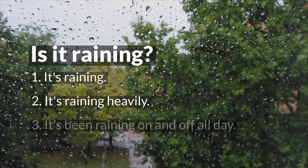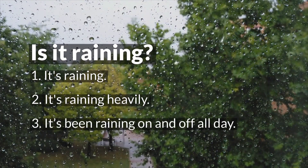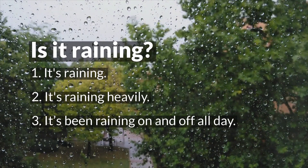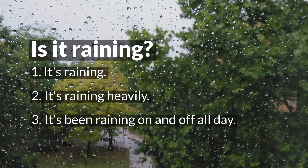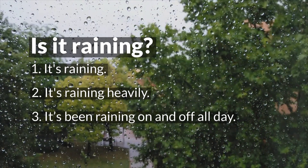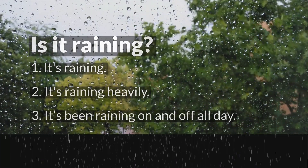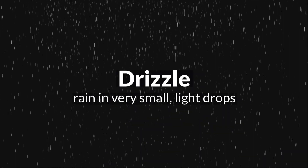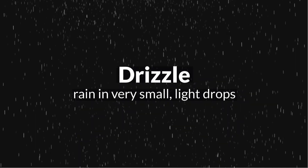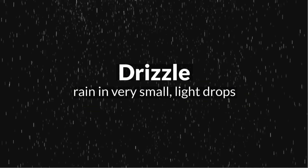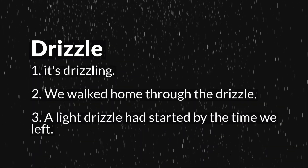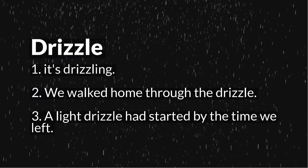The next expression: 'Is it raining?' — that's how you ask. If it is raining, you say 'Yes, it's raining,' or 'It's raining heavily,' or 'It's been raining on and off all day.' Pay attention to the expression 'on and off.' The first rain word is drizzle, which means rain in very small, light drops. 'It's drizzling.'